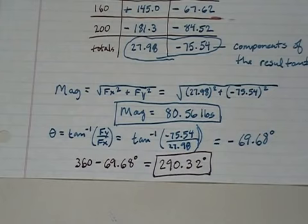And so there's your answer. Your magnitude is basically 80 and a half pounds and it's at an angle of 290.32 degrees, which is a quadrant four angle. If you have any questions, please come see me.